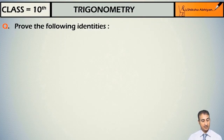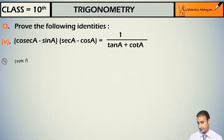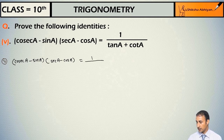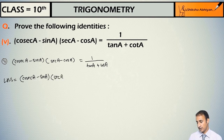Students, see the fifth identity here. The fifth identity is: (cosec(a) - sin(a)) multiplied by (sec(a) - cos(a)) is equal to 1 upon (tan(a) + cot(a)). You have to prove this. Now students, first we take the LHS and solve it. So LHS is (cosec(a) - sin(a)) in the first bracket, and the second bracket is (sec(a) - cos(a)).